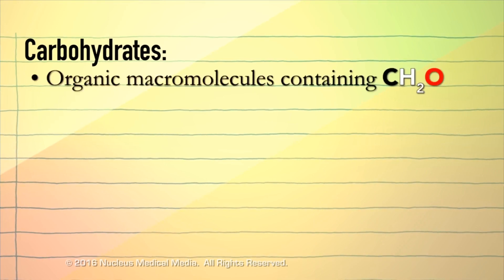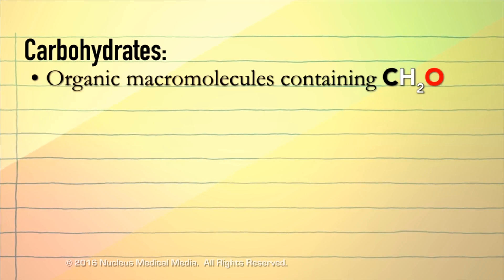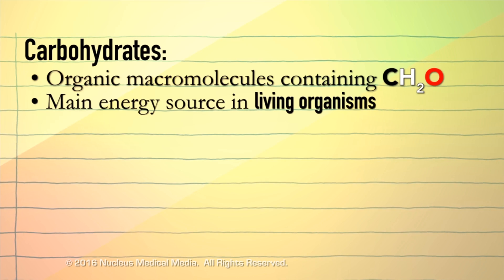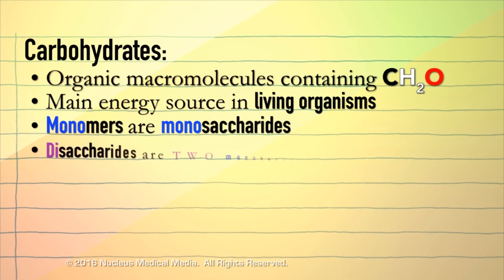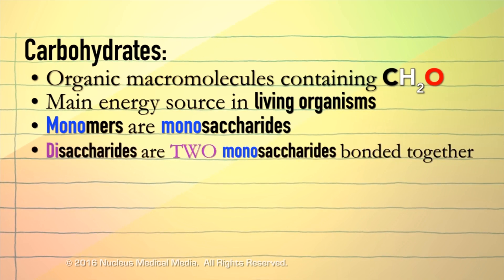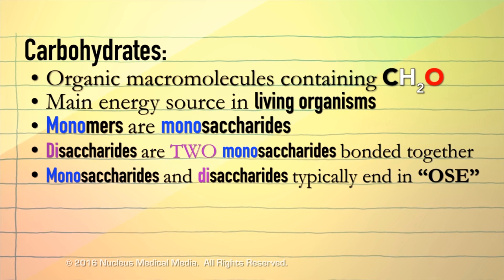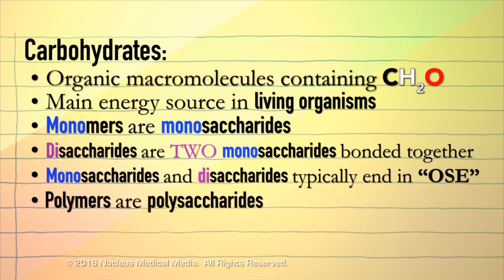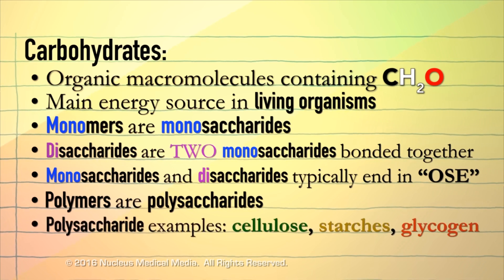To sum up: carbohydrates are organic macromolecules containing carbon, hydrogen, and oxygen in a 1-to-2-to-1 proportion. Carbohydrates are the main source of energy in living organisms. Carbohydrate monomers are simple sugars called monosaccharides. Disaccharides are two monosaccharides bonded together. Monosaccharide and disaccharide names typically end in -ose, such as glucose, fructose, and sucrose. Carbohydrate polymers are called polysaccharides, and polysaccharides include cellulose, starches, and glycogen.